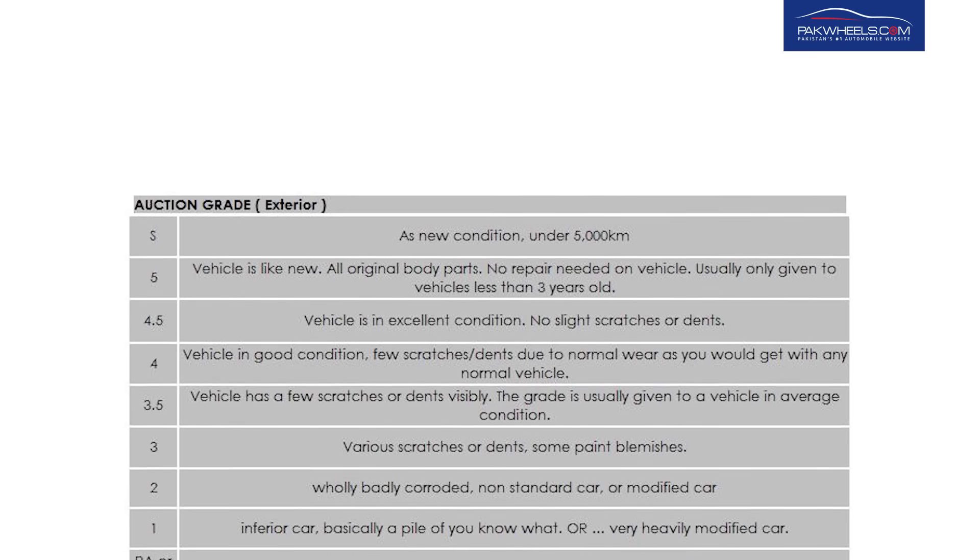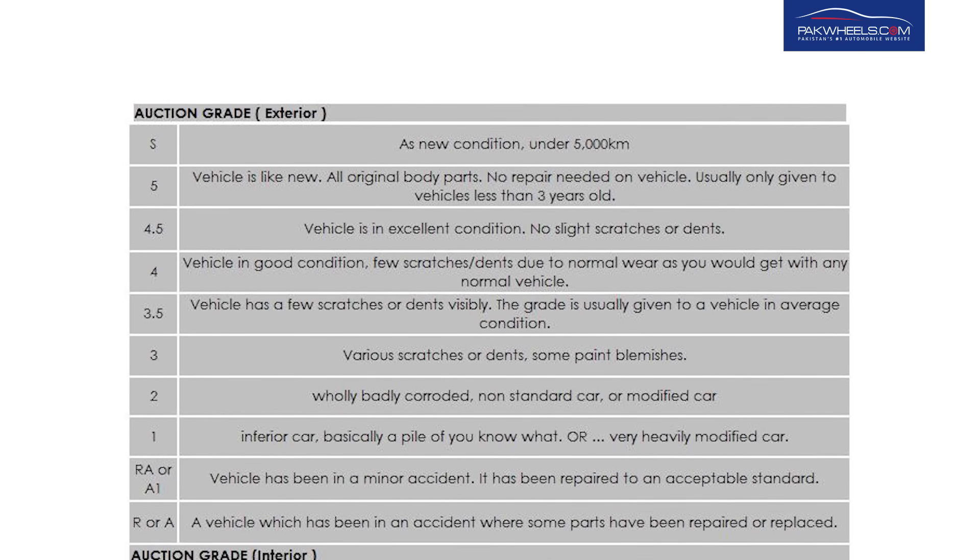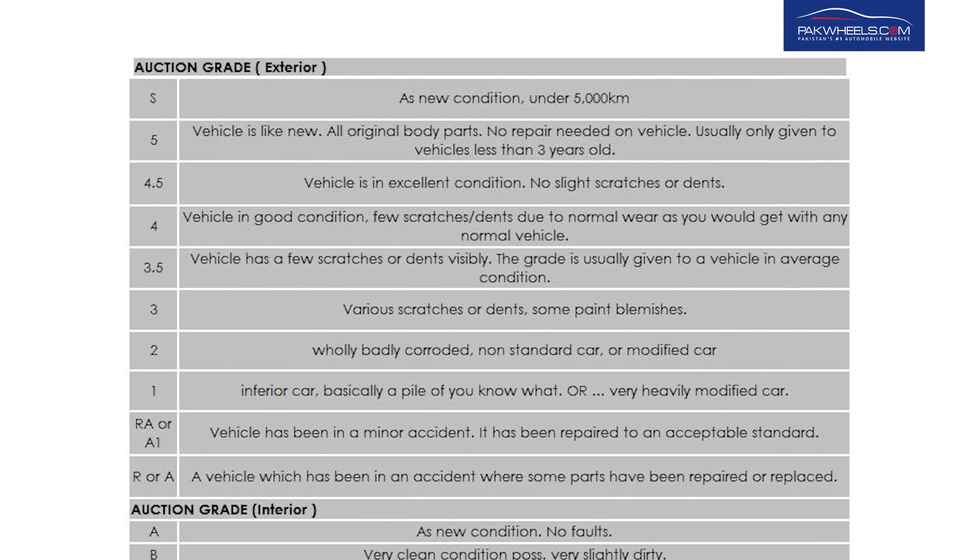After the car goes to the Japan port and through shipping, there are so many things that happen, so when you actually buy the car versus when it was auctioned, there can be a lot of difference in the condition. First of all, we have to understand the auction sheet — there are two things in it: one is the interior grade and one is the exterior grade.